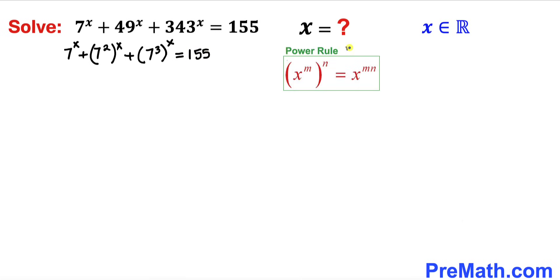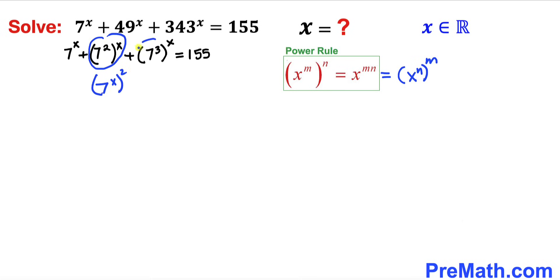Now let's recall the power rule. If we have x power m and then another power n — in other words a nested exponent — then this could be written as x power (m times n), which in turn could be written as x power n power m. So therefore we can tweak this part: this could be written as 7 power x whole power 2, and likewise 7 power x whole power 3 by using this rule.